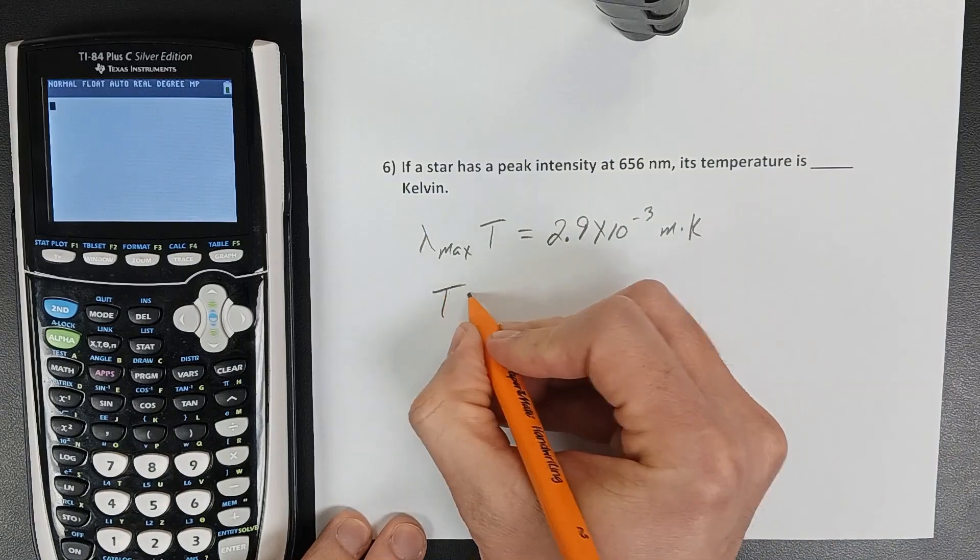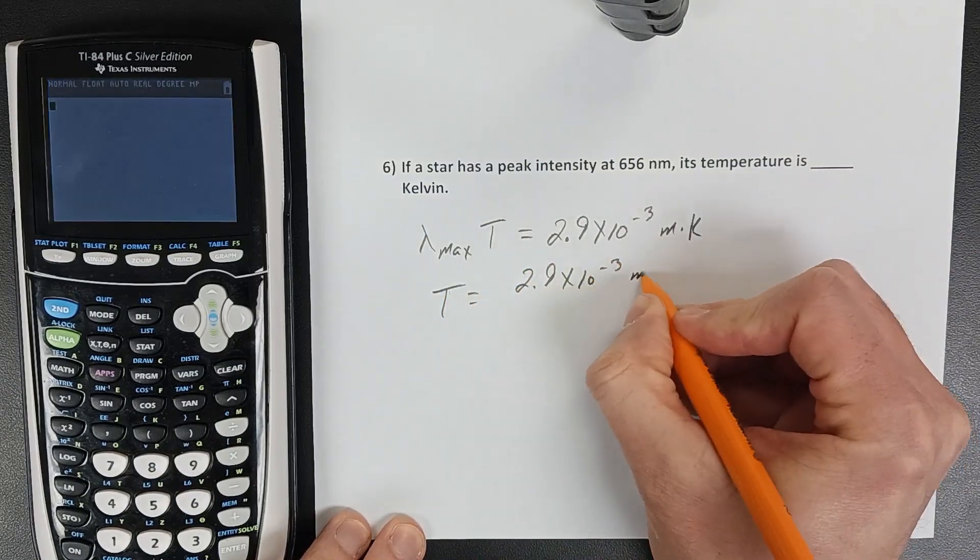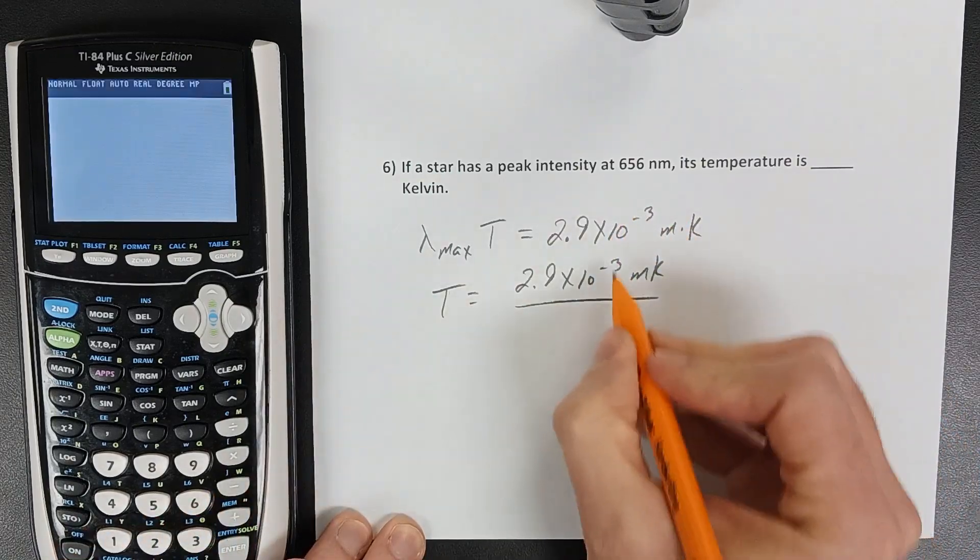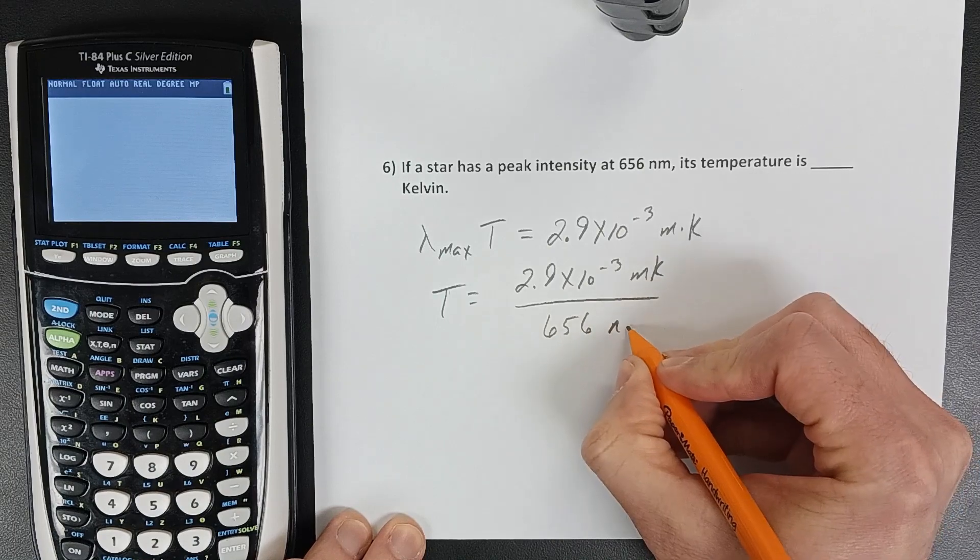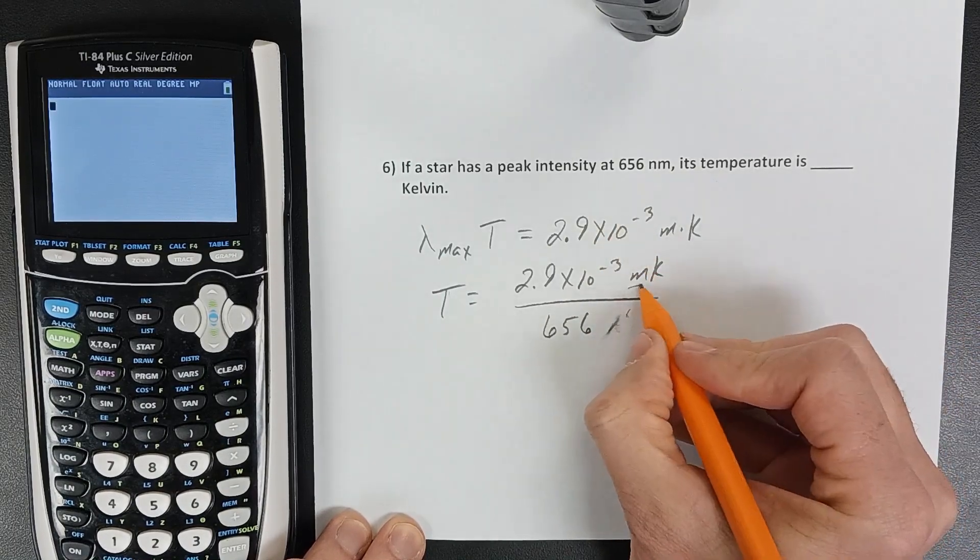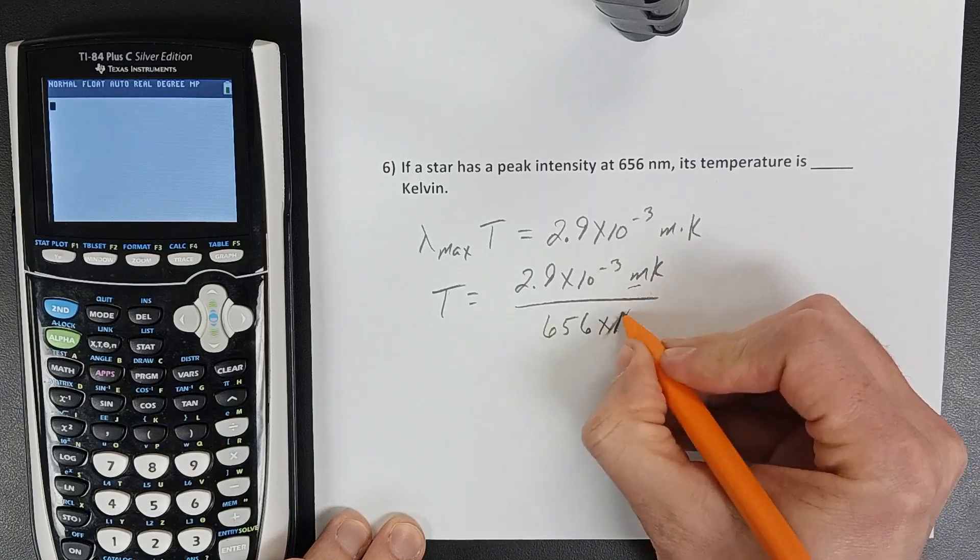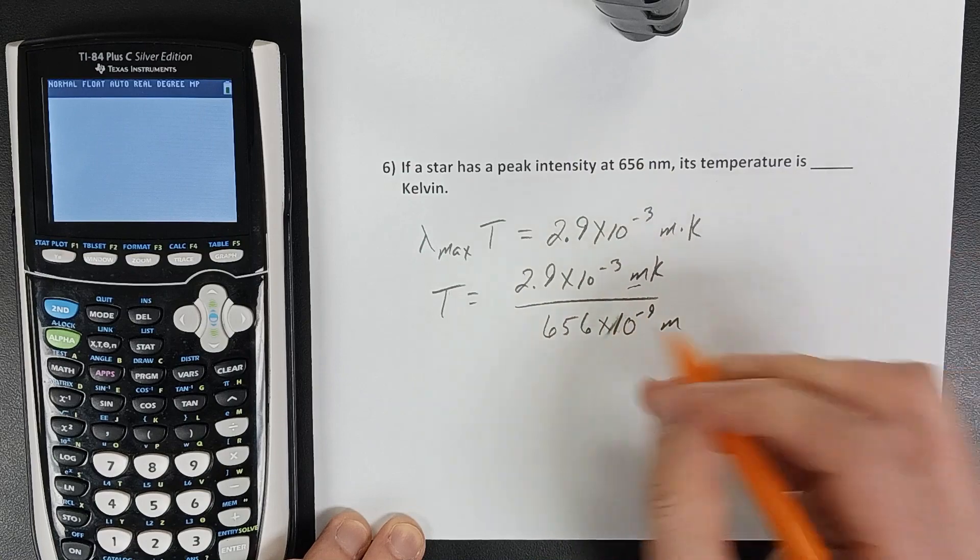We're going to divide by the wavelength. Take that constant value and divide by the 656 nanometers. But being nanometers and having meters right here we want to convert, so I'm going to make this times 10 to the negative 9 meters.